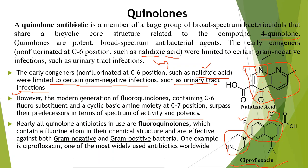The 7th position is very important — this is the piperazine ring, which is why the compound is called ciprofloxacin. Nearly all quinolone antibiotics in use today are fluoroquinolones, which contain a fluorine atom in their chemical structure and are effective against both gram-negative and gram-positive bacteria. Ciprofloxacin is one of the most widely used antibiotics worldwide.